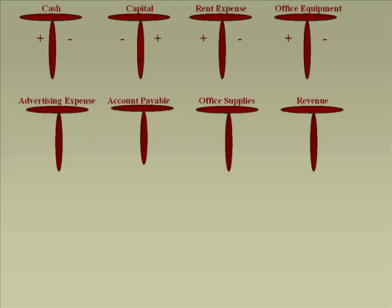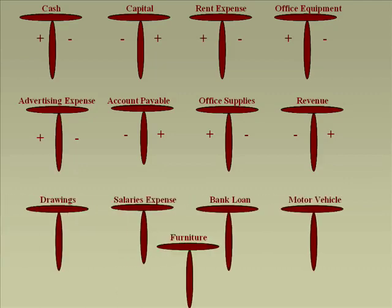Here come the next sets of signs. The only thing which would confuse you was drawings — just remember, for the purpose of T accounts, drawings is treated similar to an expense. So increase left, decrease right. For drawings, it's always plus on the left, minus on the right.